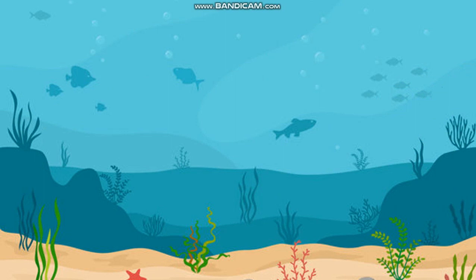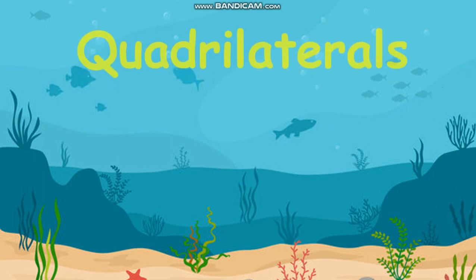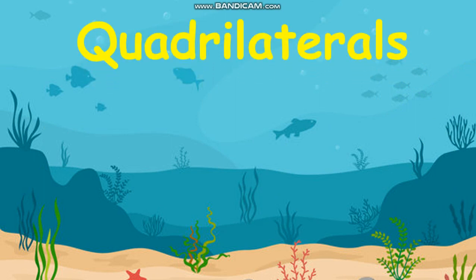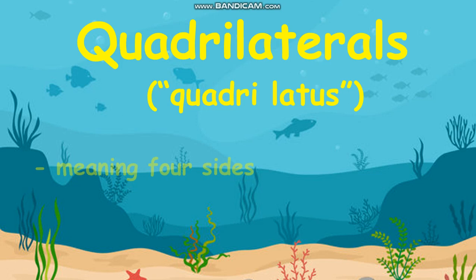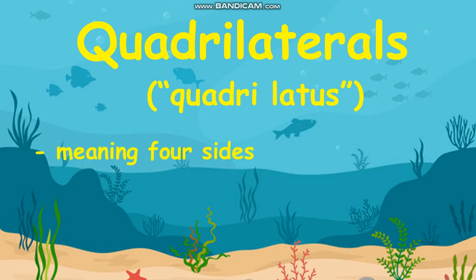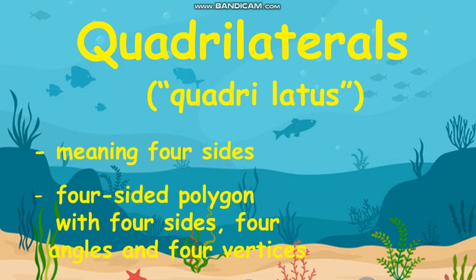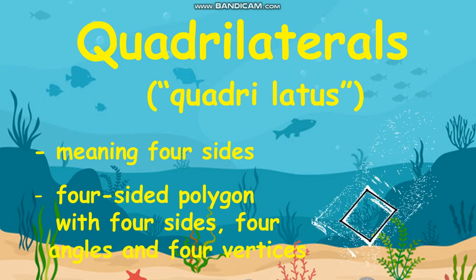What exactly is a quadrilateral? The word quadrilateral is derived from the Latin words quadri, a variant of four, and latus, meaning side. A quadrilateral is a four-sided polygon with four angles and four vertices.